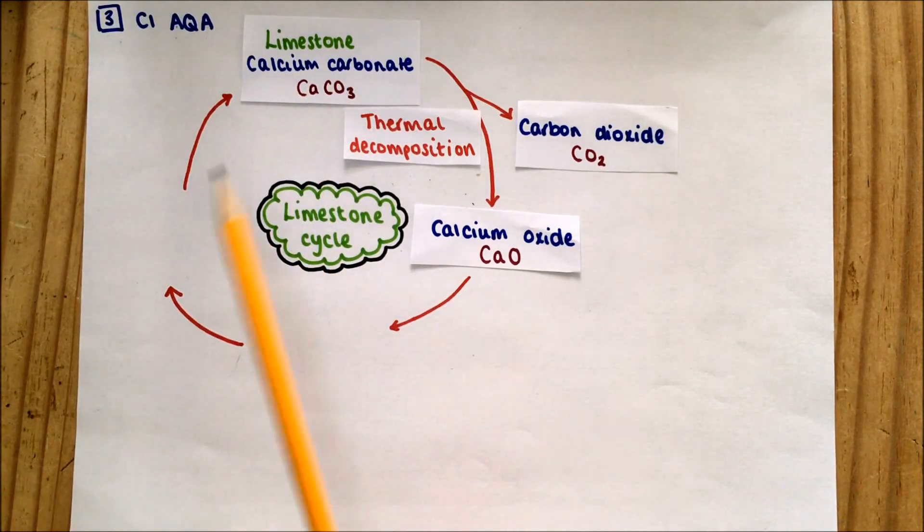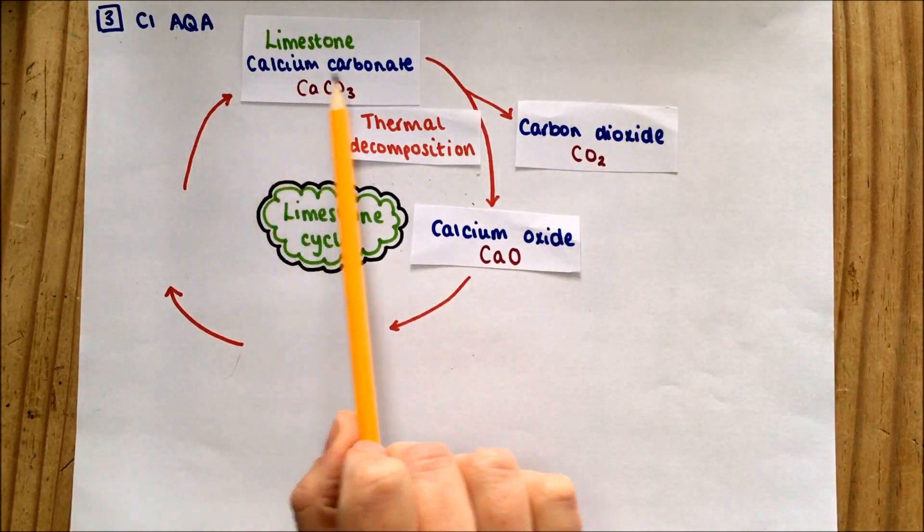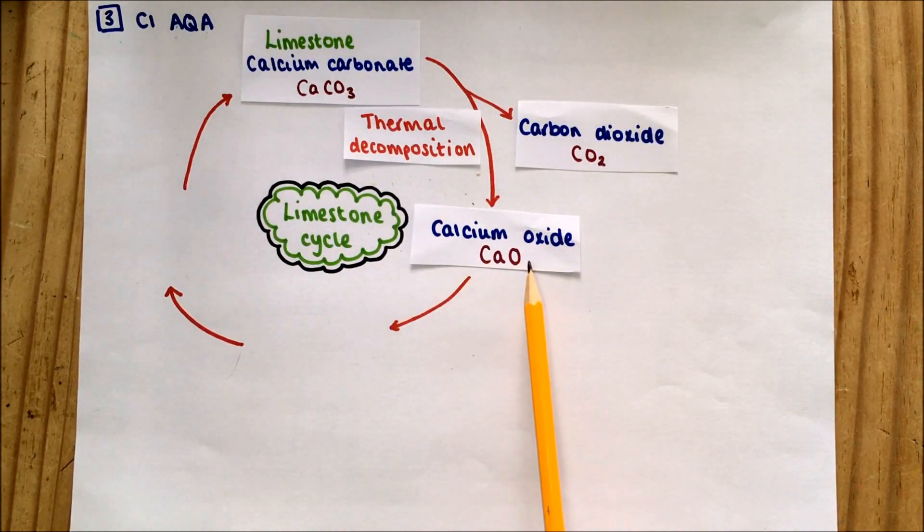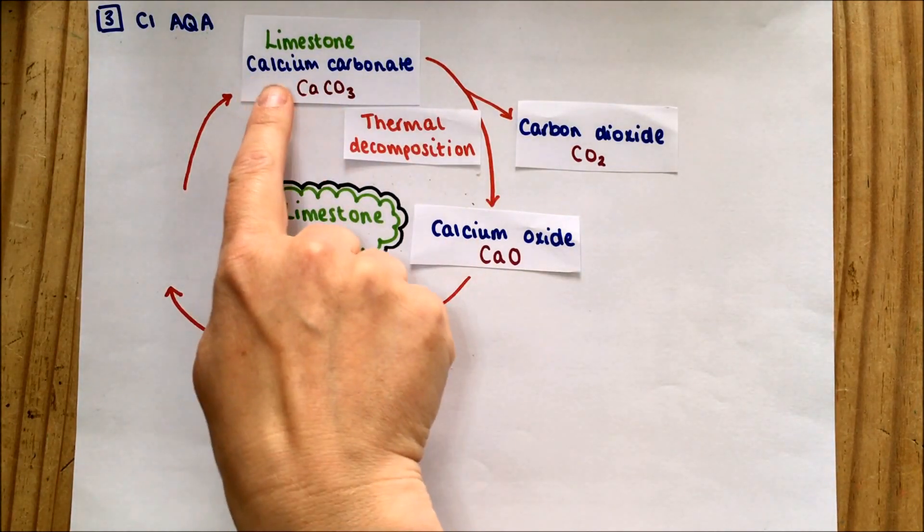Now they might ask you about a different carbonate, not calcium carbonate. They might ask about zinc carbonate or sodium carbonate. They will decompose in exactly the same way. If we had sodium carbonate, it would make sodium oxide and carbon dioxide. If we had zinc carbonate, it would make carbon dioxide and zinc oxide. The only difference might be it won't break down with a Bunsen burner flame - it may need slightly more heat, but that will be the only difference. Make sure you can apply this theory to a different metal carbonate they might give you.